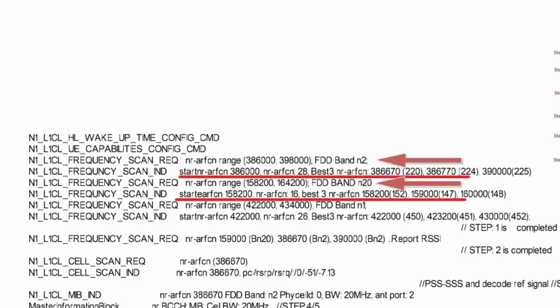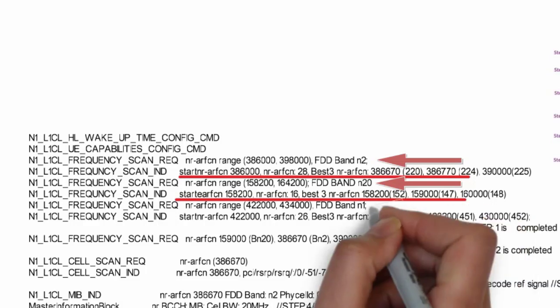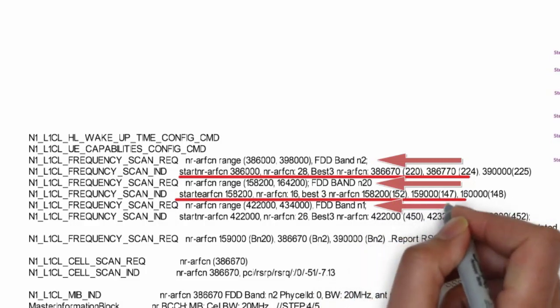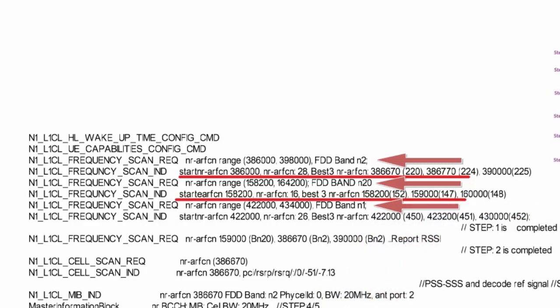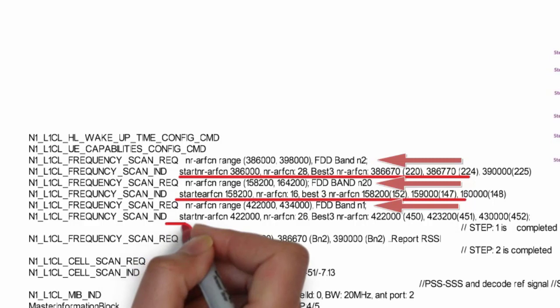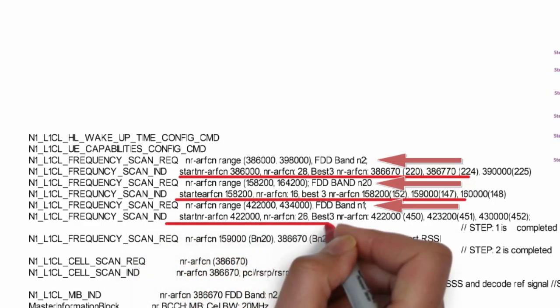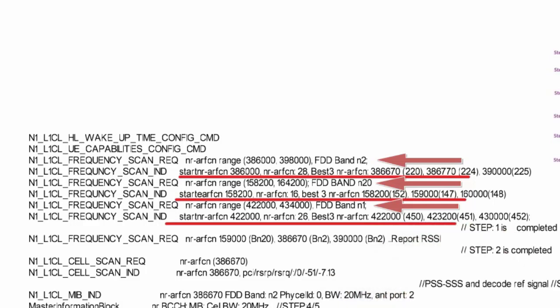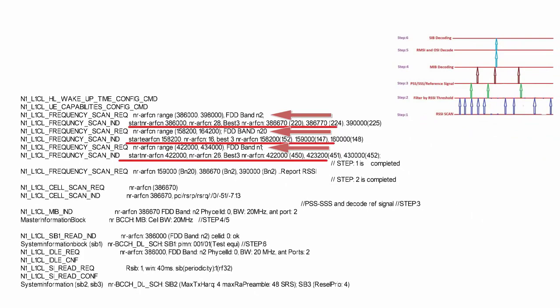N1L1CL sent a frequency scan request with NR-ARFCN range 158200 to 164200 for band N20. The result showed scan started from 158200, total NR-ARFCN scan is 16, and out of 16 ARFCNs, 3 best ARFCNs are 158200, 159000, and 160000 — these 3 frequencies for N20. Again, N1L1CL sent a frequency scan request with NR-ARFCN range 422000 to 434000 for band N1. Result: scan started from 422000, total NR-ARFCN scan is 60, and 3 best ARFCNs are 422000, 423200, and 430000 — these 3 frequencies for band N1. Step 1 process is now completed.